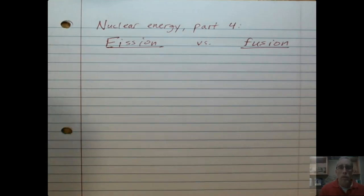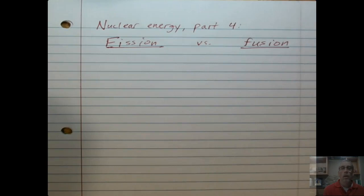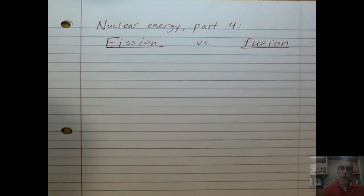Welcome back to another little segment related to nuclear energy. We've been looking at, just in general, what nuclear reactions are. And so the next couple of parts, part four and part five and maybe even beyond, we're going to focus on some ways of categorizing different nuclear reactions. So in this first part here, part four, I want to focus specifically on the difference between a fission reaction and a fusion reaction.